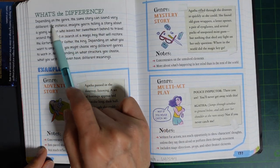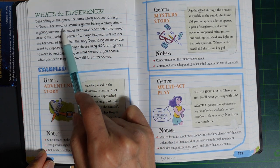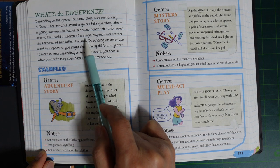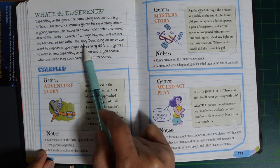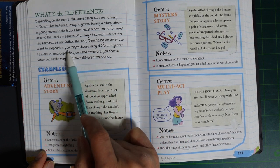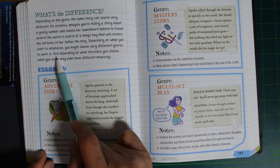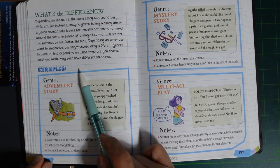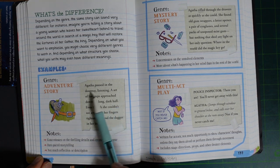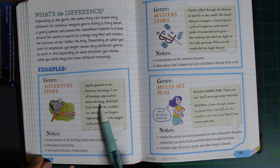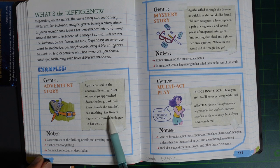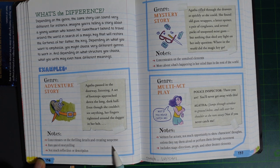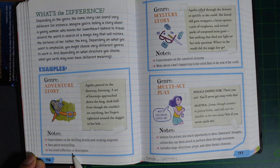What's the difference? Depending on the genre, the same story can sound very different. For instance, imagine you are telling a story about a young woman who leaves her sweetheart behind to travel around the world in search of a magic key that will restore the fortune of her father, the king. Depending on what you want to emphasize, you might choose a very different genre. Example: Genre—Adventure Story. Agasa froze in the doorway, listening as a set of footsteps approached down the long dark hall. Even though she couldn't see anything, her fingers tightened around the dagger in her belt. Notes: Concentrate on the thrilling details and creating suspense. Fast-paced storytelling. Not much reflection or description.